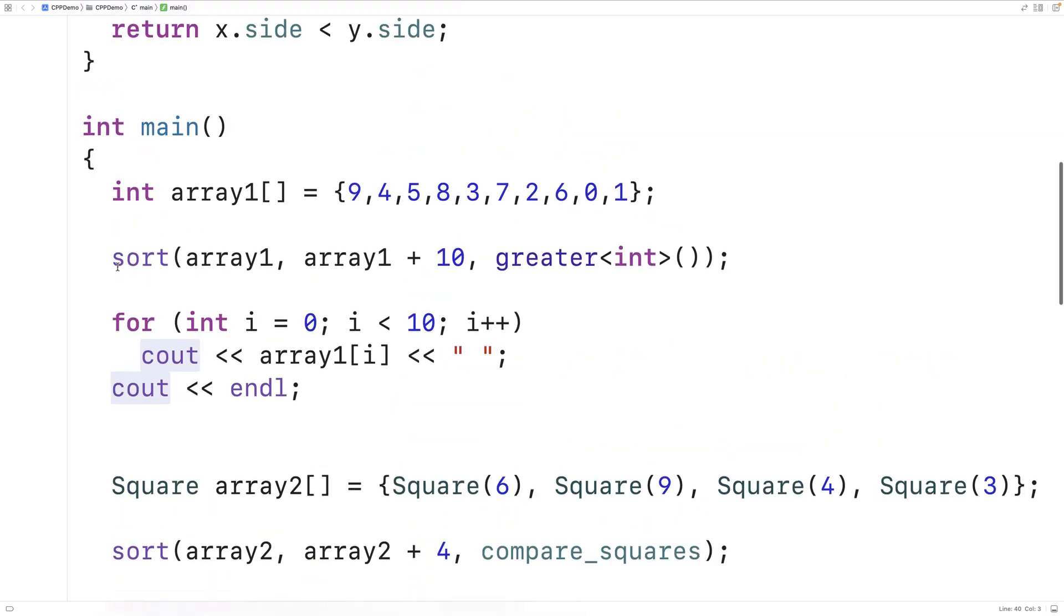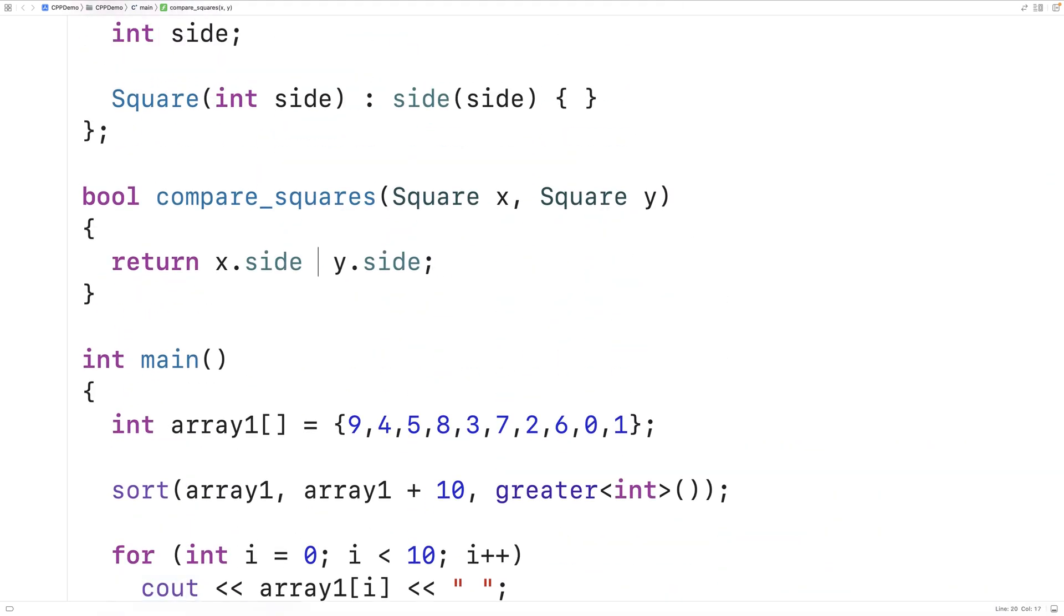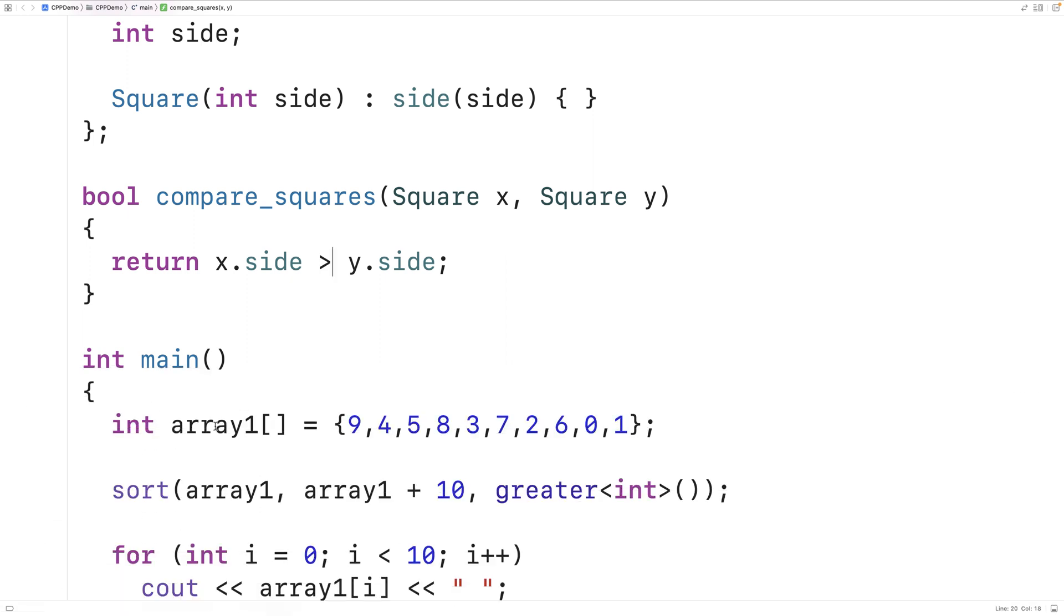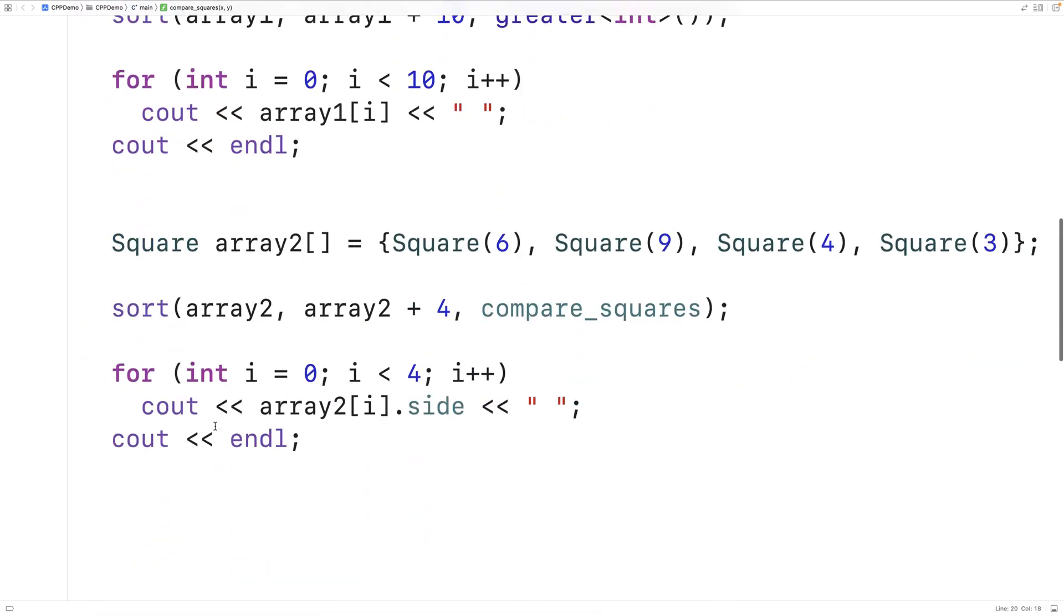And so if we change this operator here to greater than and we save it and we run it, that's going to reverse the sorting order when we call the sort function. So that's how we can sort user defined types.